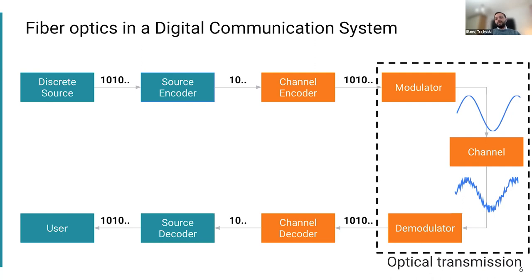I say 'hopefully' because during transmission there are many effects that distort the signal, as you can see on the right-hand side here. The perfect signal with no distortions is transmitted. Depending on the quality, the length, and other attributes of the channel, it changes. We'll see later on how the signal appears at the other end.